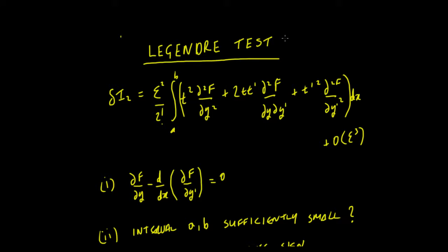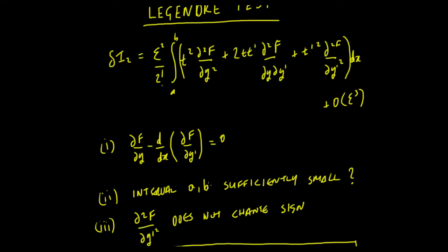In this video we're going to look at the Legendre test. The idea behind this is that if we work out the Euler-Lagrange and find a stationary point but we're not able to tell whether it is actually a maximum or a minimum, then we'd have to look at the second variation. The sign of the second variation tells us: if it is less than zero, the stationary point is a maximum; if it is greater than zero, the stationary point is a minimum. But this is a difficult equation to handle.